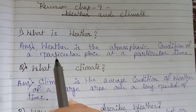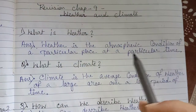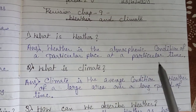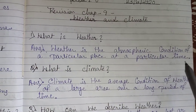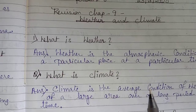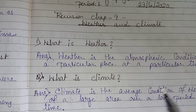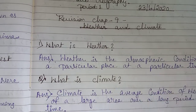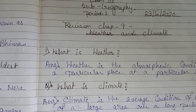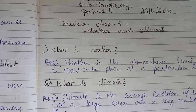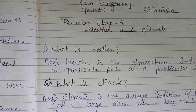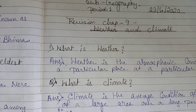The first question is: what is weather? Weather is the atmospheric condition of a particular place at a particular time. It means weather is the atmospheric condition of a particular place at a particular time.